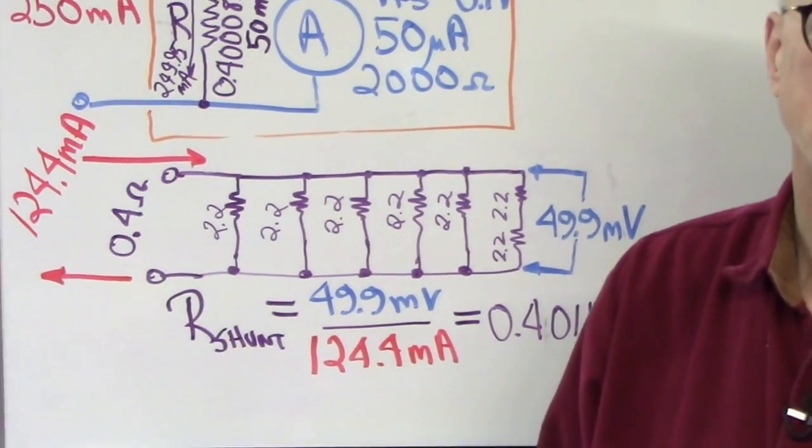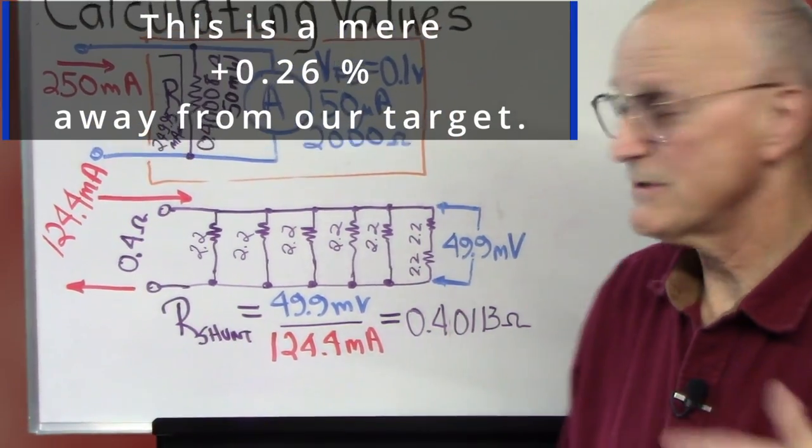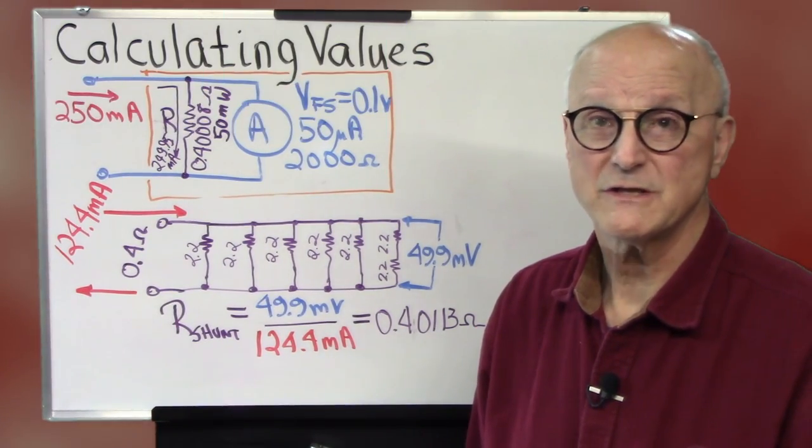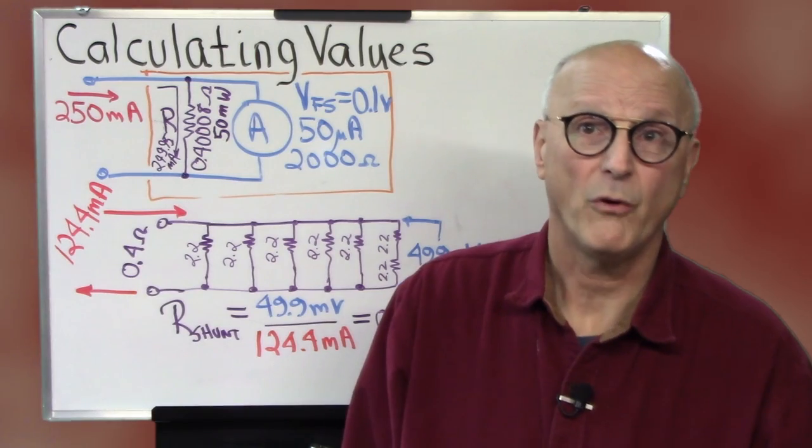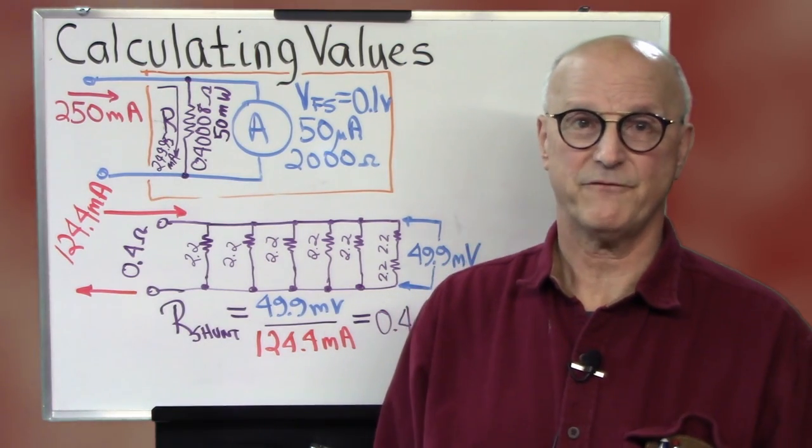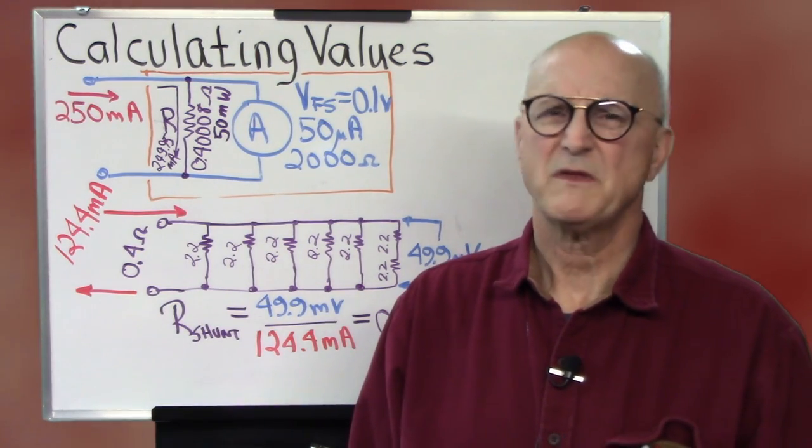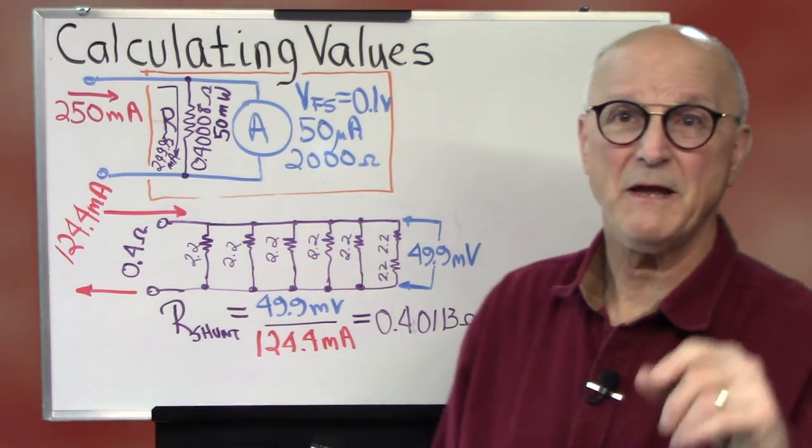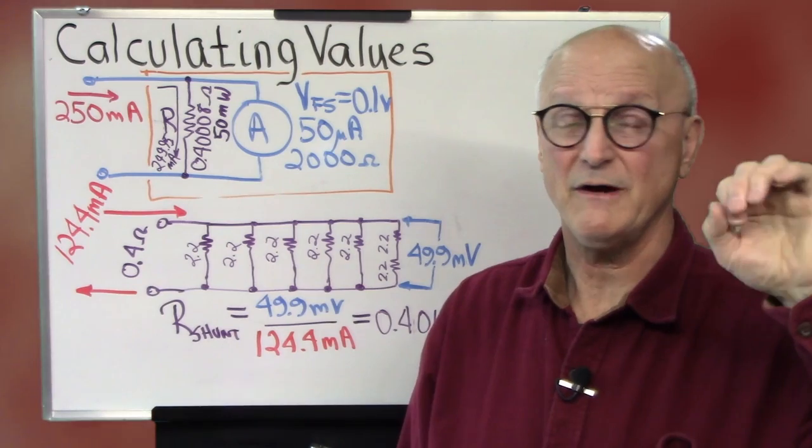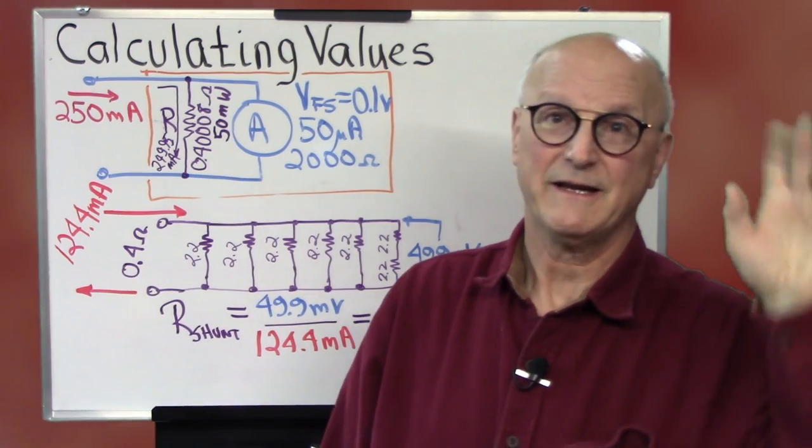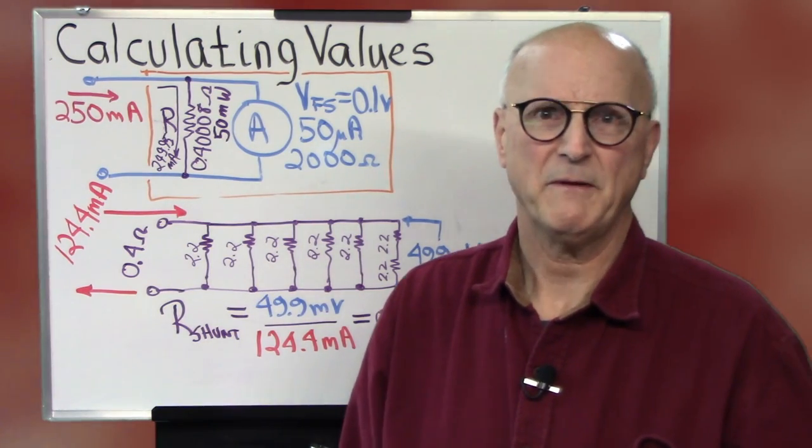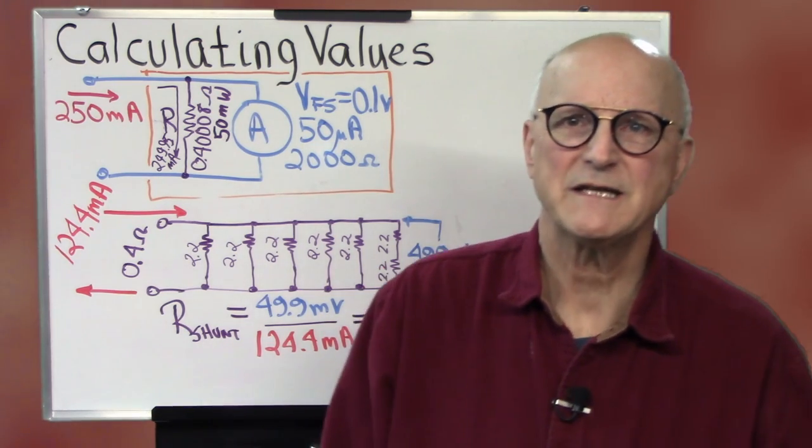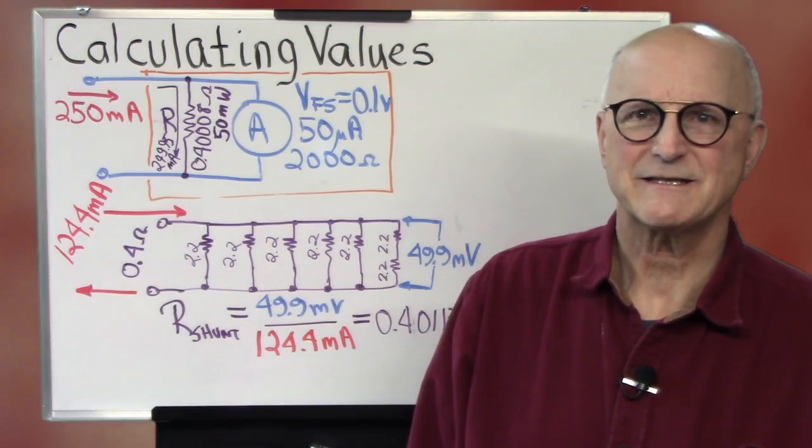Now, our goal was 0.4008. But that looks pretty doggone close. And we already determined that 0.4 ohms was going to be sufficient. So, you know, I could put another resistor in parallel with this one. Maybe a little trimmer or a potentiometer so I could calibrate my meter movement. But before I go through all that mess, I think I'm going to see how this performs. So, let's set this up.